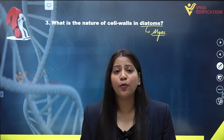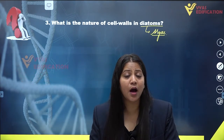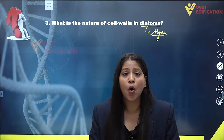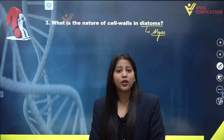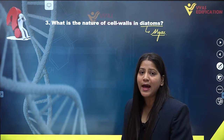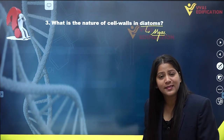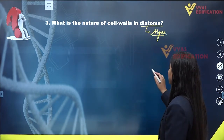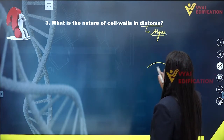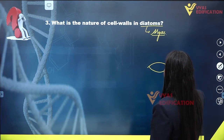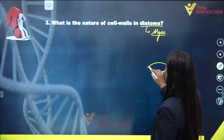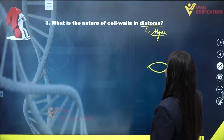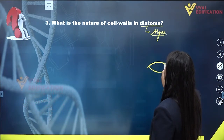Diatoms are the only organisms with cell walls made up of transparent opaline silica. The cell walls of diatom algae are arranged and forming a soap-box like structure — the cell walls are arranged like this, forming a soap box.